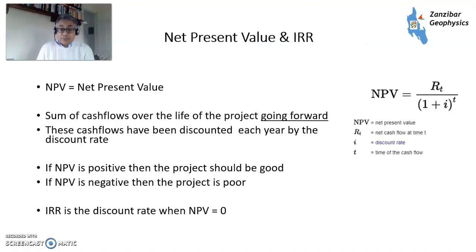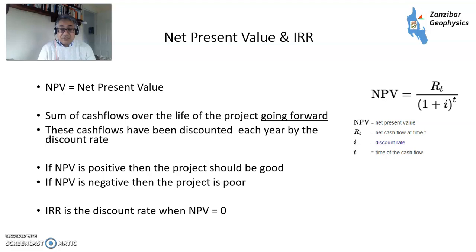So, what is net present value? It's the sum of cash flows over the life of a project going forwards from today. We ignore what is spent before, so sunk cost fallacy doesn't happen — looking forward. We discount these cash flows each year by the discount rate because of the time value of money. If the NPV is positive, then the project should be good. If the NPV is negative, then the project should be poor.